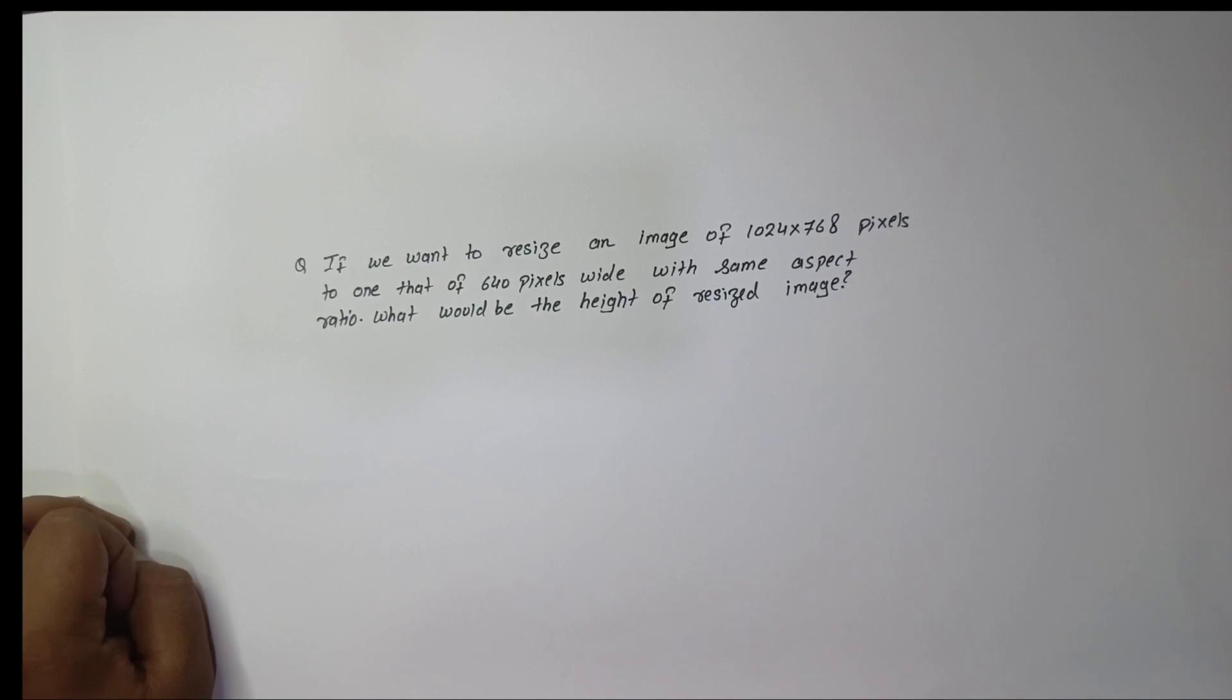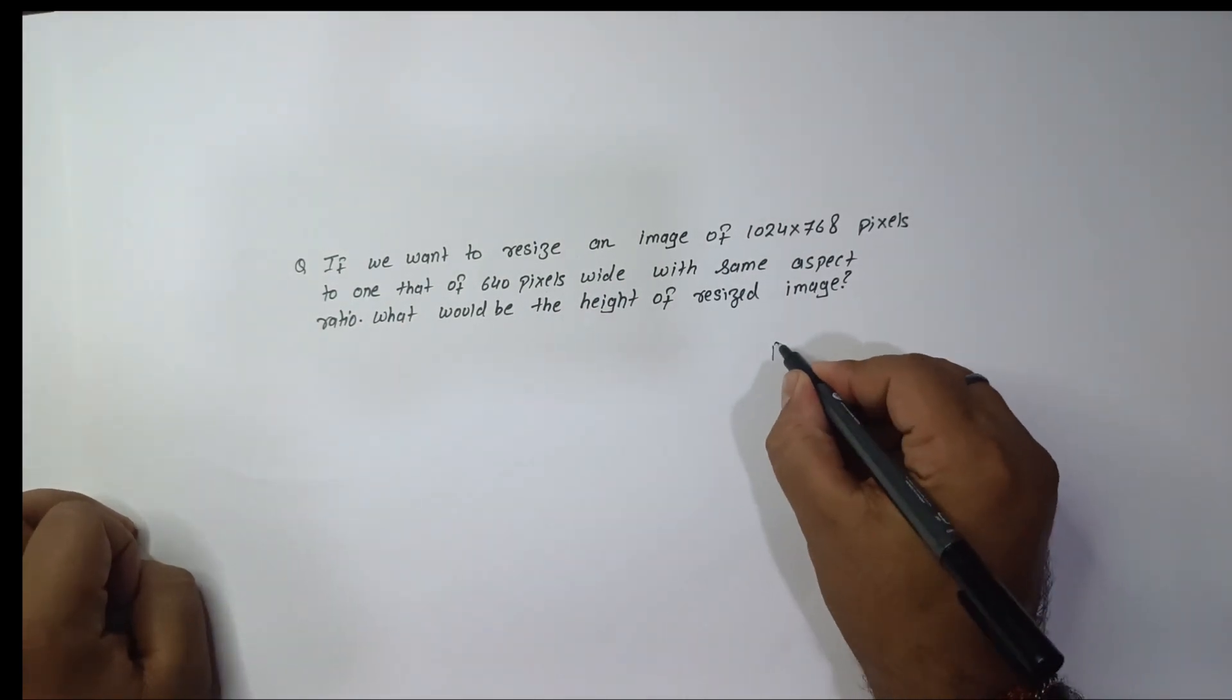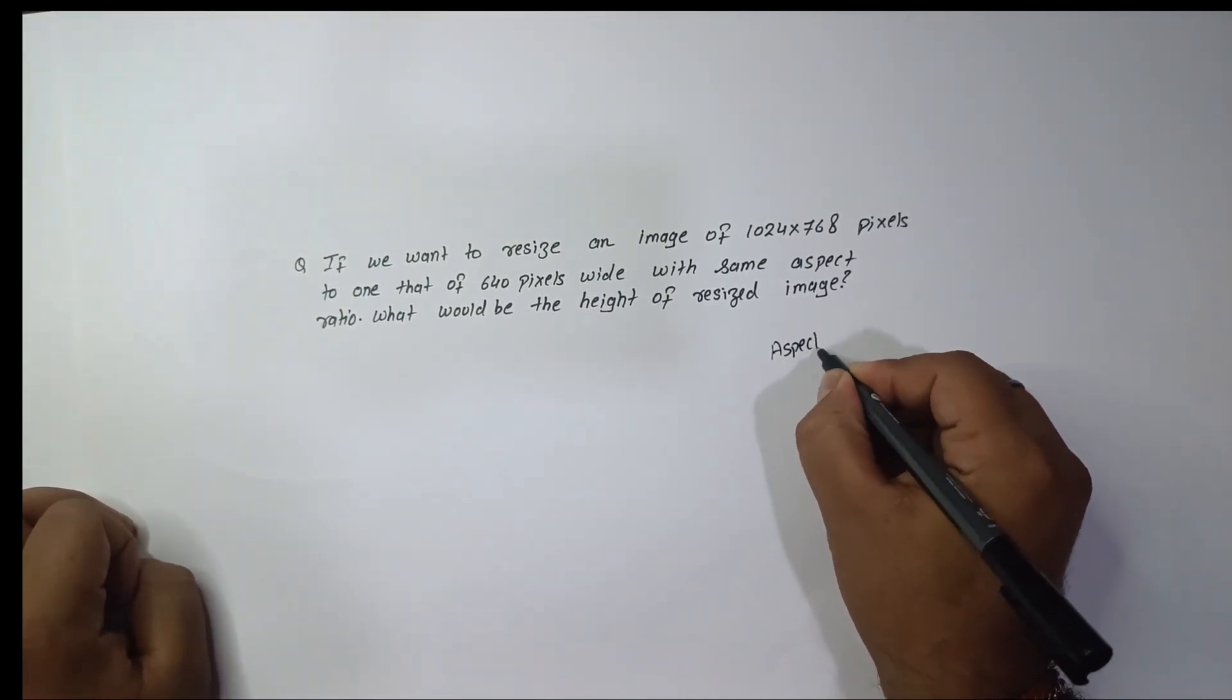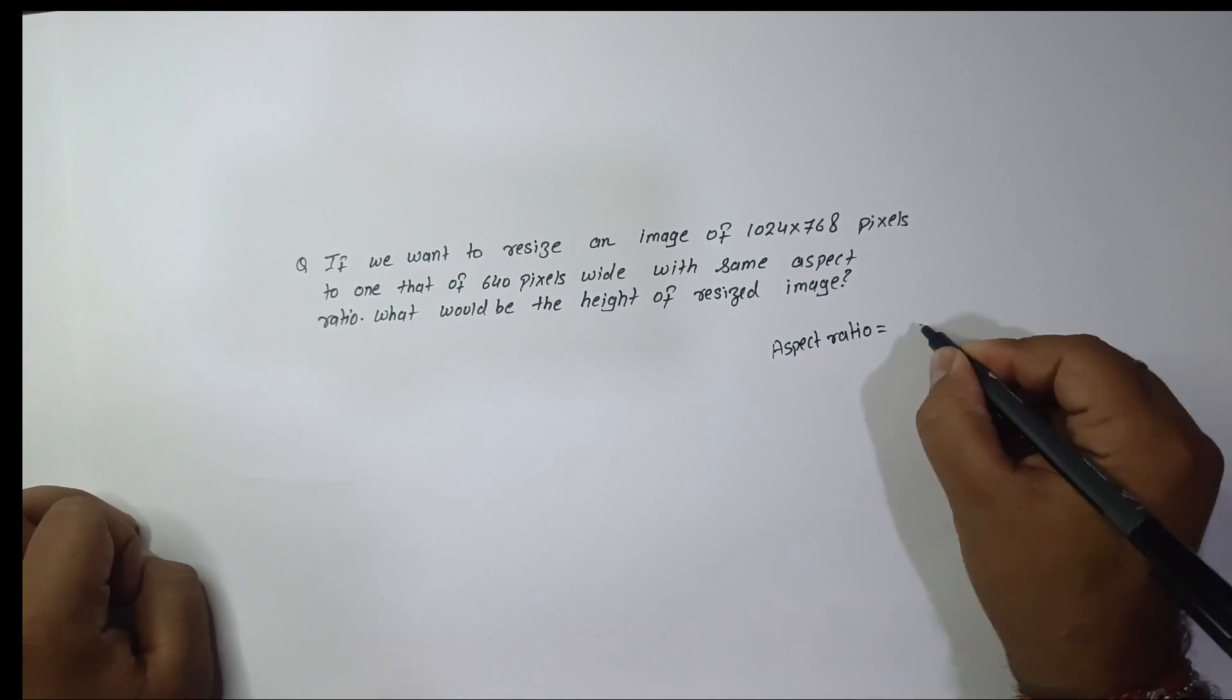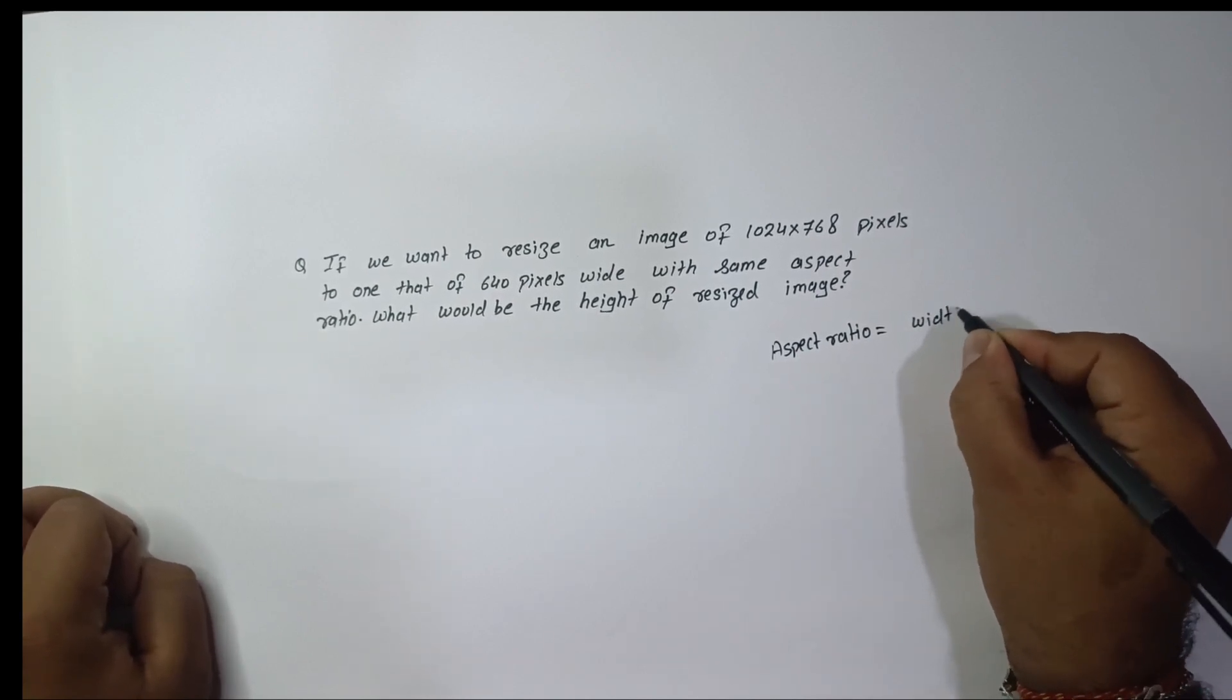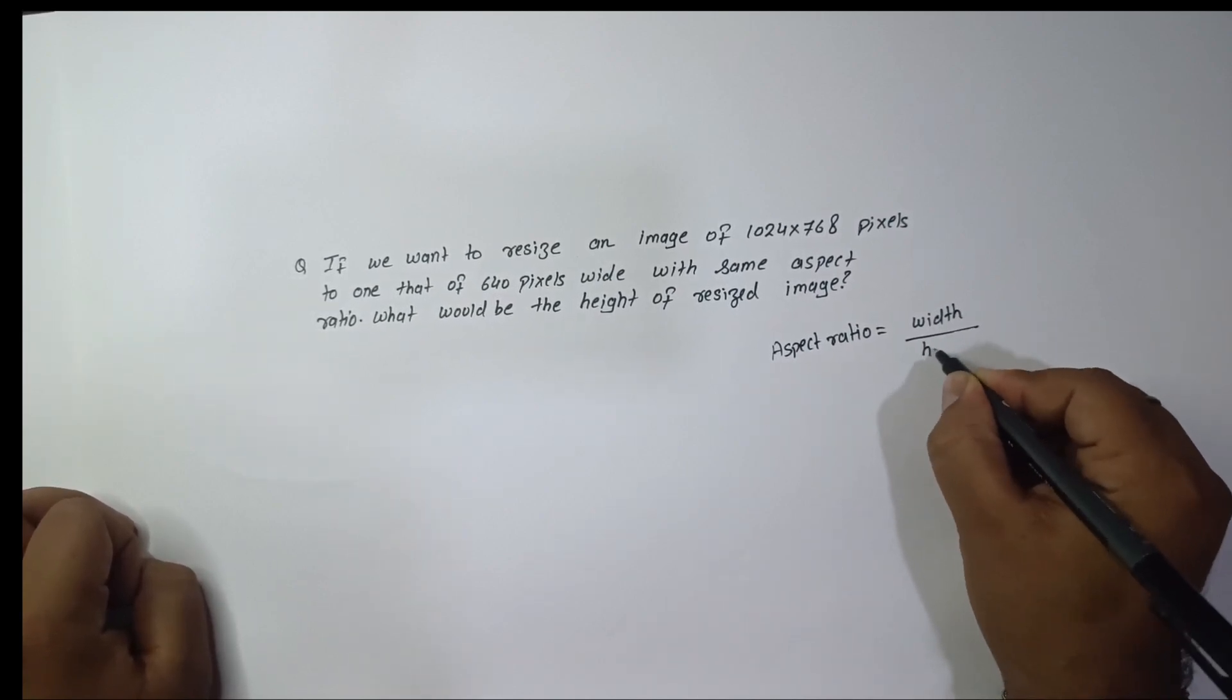Hello everyone, in this video we are going to learn about aspect ratio in computer graphics. Aspect ratio is the ratio of width of an image to its height, so we say that aspect ratio equals width of an image divided by its height.